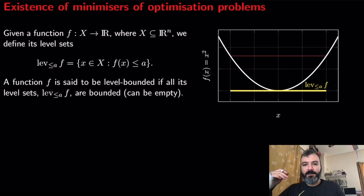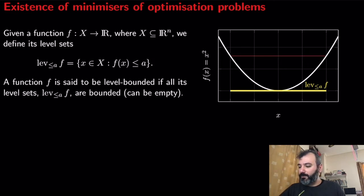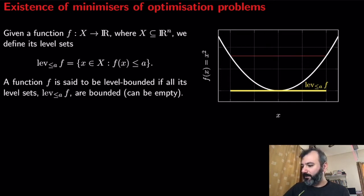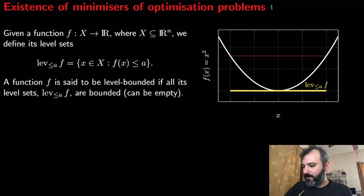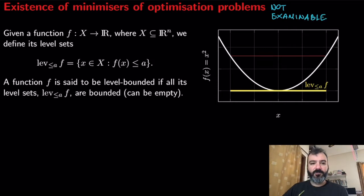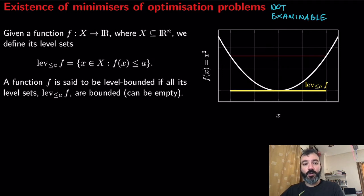It is natural to ask under what conditions does an optimization problem have a minimizer. To do so, we need to state one definition — that of a level set. Note that this part, from this point until the end of this section, is not examinable. Nevertheless, it's interesting, so I thought I should include it in case you're curious about under what conditions an optimization problem has a minimizer.